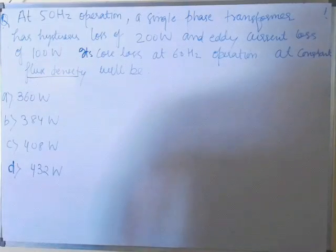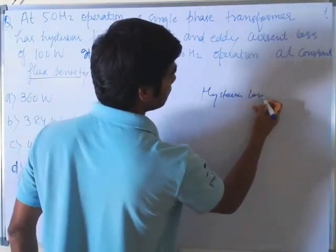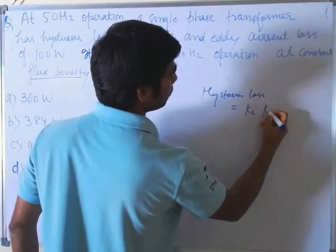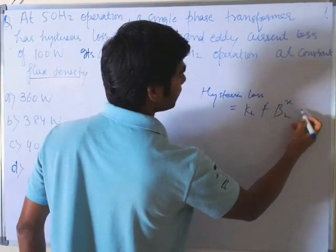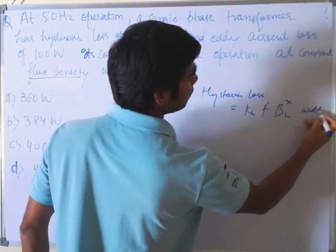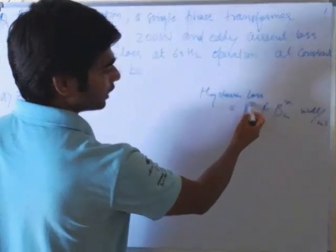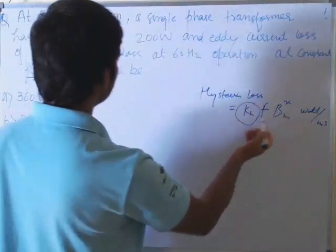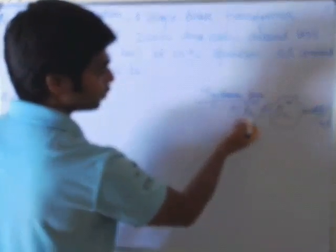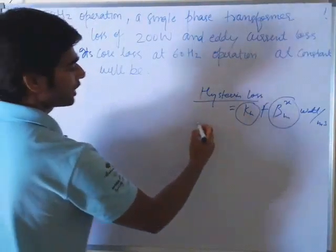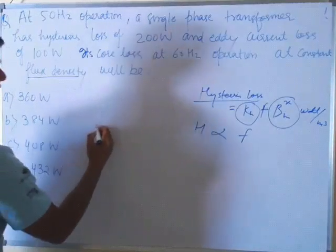We know the expression for hysteresis loss is kH × frequency × BM to the power x, in watt per meter cube. Since kH is constant and in the question the magnetic flux density BM is also constant, hysteresis loss is only dependent on frequency. So hysteresis loss is directly proportional to frequency.